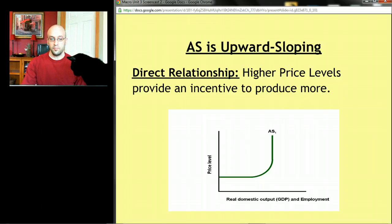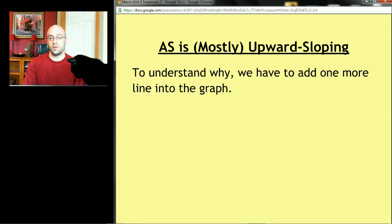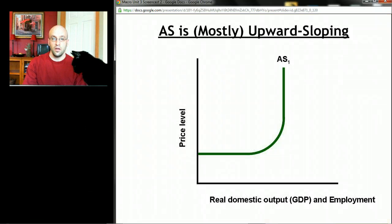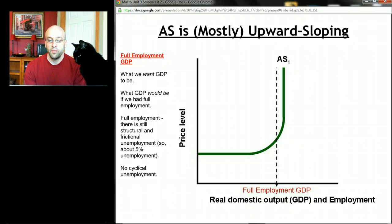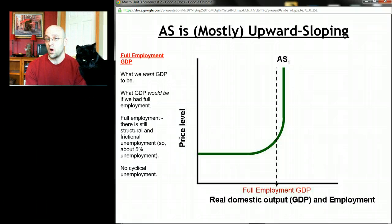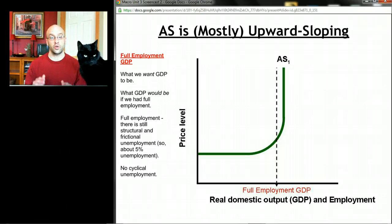To understand why aggregate supply has this weird shape, we have to add one line into the graph. There's a very special — a magical — place in this graph. Follow that dotted line down until it hits the x-axis, our GDP axis. This is a very special level of GDP: it's what we called in the last unit full employment GDP. Think of that as what GDP would be if we had full employment — if we're at that natural rate of unemployment — the amount of stuff we'd make if unemployment levels were basically perfect for our economy.